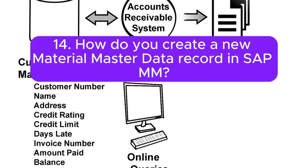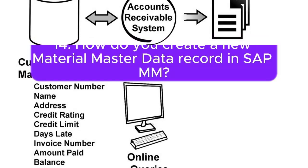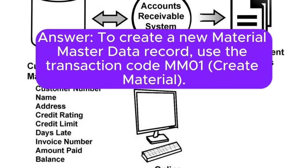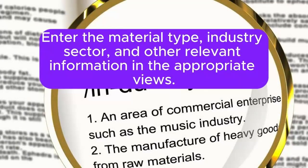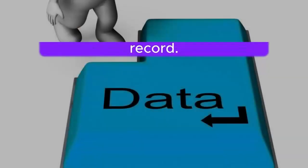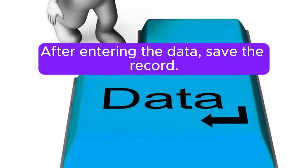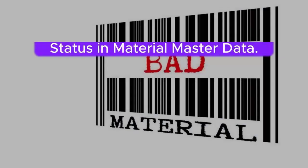Question 14: How do you create a new Material Master data record in SAP MM? To create a new Material Master data record, use the transaction code MM01 (create material). Enter the material type, industry sector, and other relevant information in the appropriate views. After entering the data, save the record.